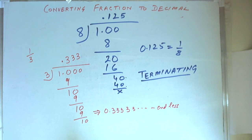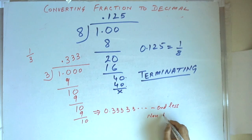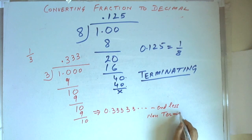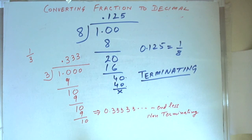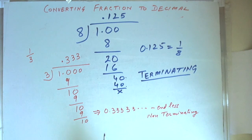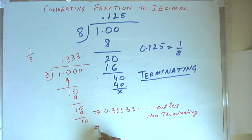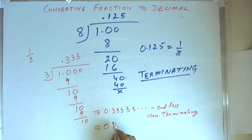In this situation, this is called non-terminating because it is not coming to a completion. This is a non-terminating fraction because the decimal value is not terminating. But what is happening is it is recurring — 3 is recurring or repeating.